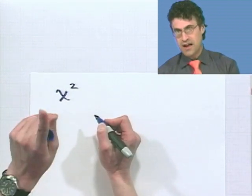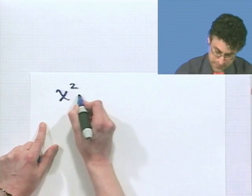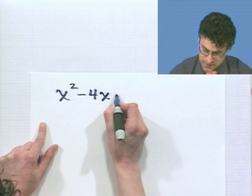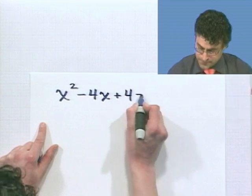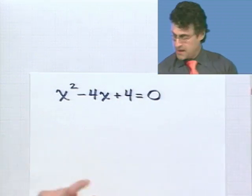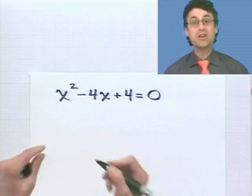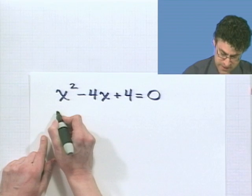x squared. Are you ready? That's how I'm starting out. I'm starting out with x squared. Minus 4x plus 4 equals 0. I just made that up. It's a homemade equation for us. Let's try to solve it. Now, we know that there are going to be two solutions. Let's see if we can find them.